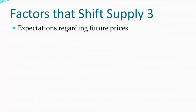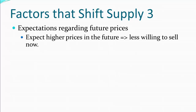Another factor that can shift supply is expectations regarding future prices. We can imagine what happens if we expect higher prices in the future. As a seller, if I expect the price of my good is going to go way up in the future, I certainly don't want to sell it now — I'll hold onto it and wait until the future to sell it. So there's a decrease in current supply, as we are shifting when we want to provide things from now until later. Right now we see a decrease in supply.